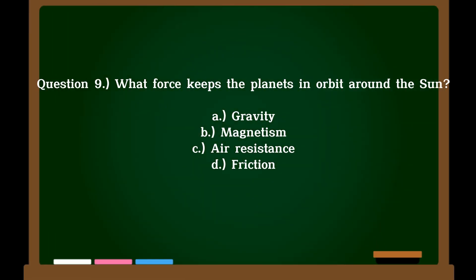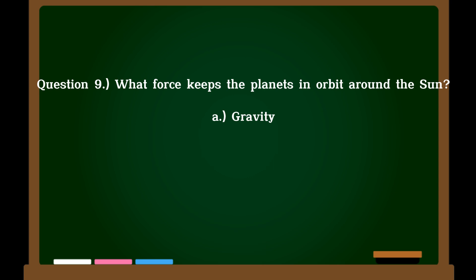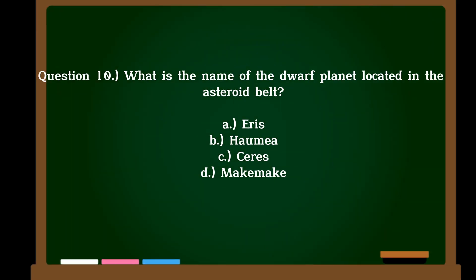Question 9. What force keeps the planets in orbit around the sun? A. Gravity, B. Magnetism, C. Air resistance, D. Friction. Correct answer: A. Gravity.